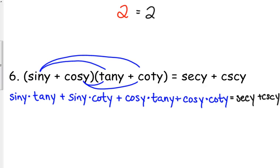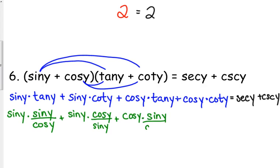Now, unlike the previous problem, we don't have any terms that we can combine here. We've got sine tangent, sine cotangent, cosine tangent, cosine cotangent. We can't put any of those together. So, here's where we need to express everything in terms of sine and cosine. Tangent is sine over cosine. Cotangent is cosine over sine. Tangent is sine over cosine. Cotangent is cosine over sine.